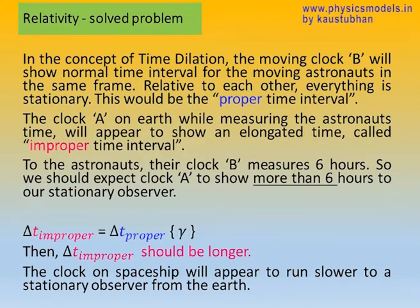But to the stationary observer on Earth, it will appear as if the astronaut's clock is moving slowly. So that is the improper time interval. The improper time interval will be longer than the accurate proper time interval.